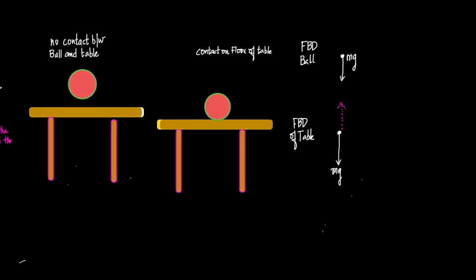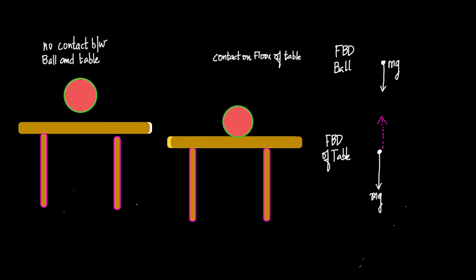Now let me explain the concept of normal reaction further. In case 1, the only force acting on the body is its weight acting downwards. Most students get confused thinking this weight acts on the floor — no, it is not. The weight acts on the block itself, not on the floor of the table.